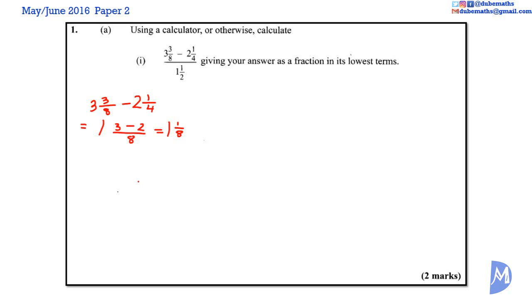So the problem becomes 1⅛ divided by 1½. This is equal to converting both fractions to improper fractions. 1 multiplied by 8 plus 1 is 9, 9 over 8 divided by 1 multiplied by 2 is 2 plus 1 is 3, 3 over 2.